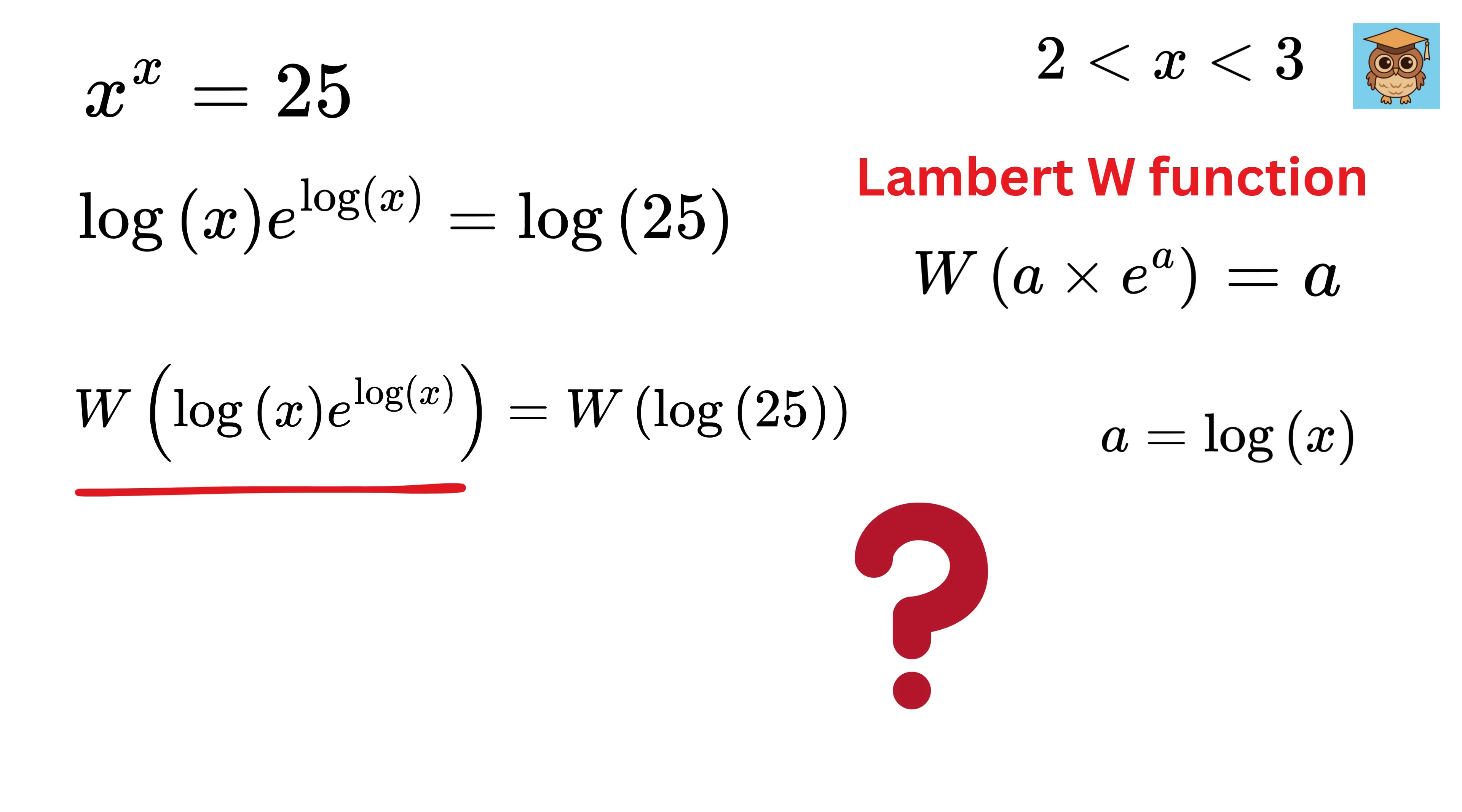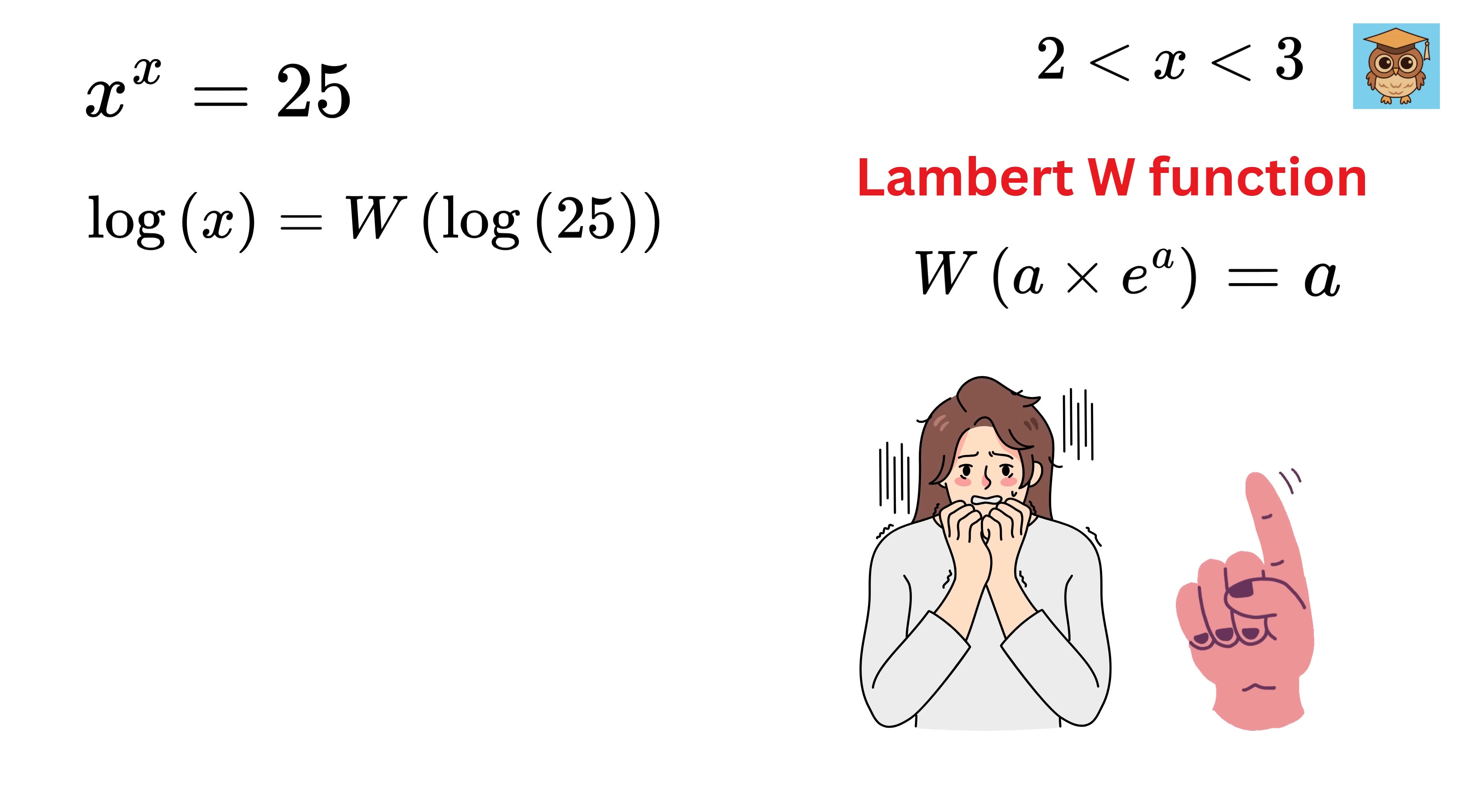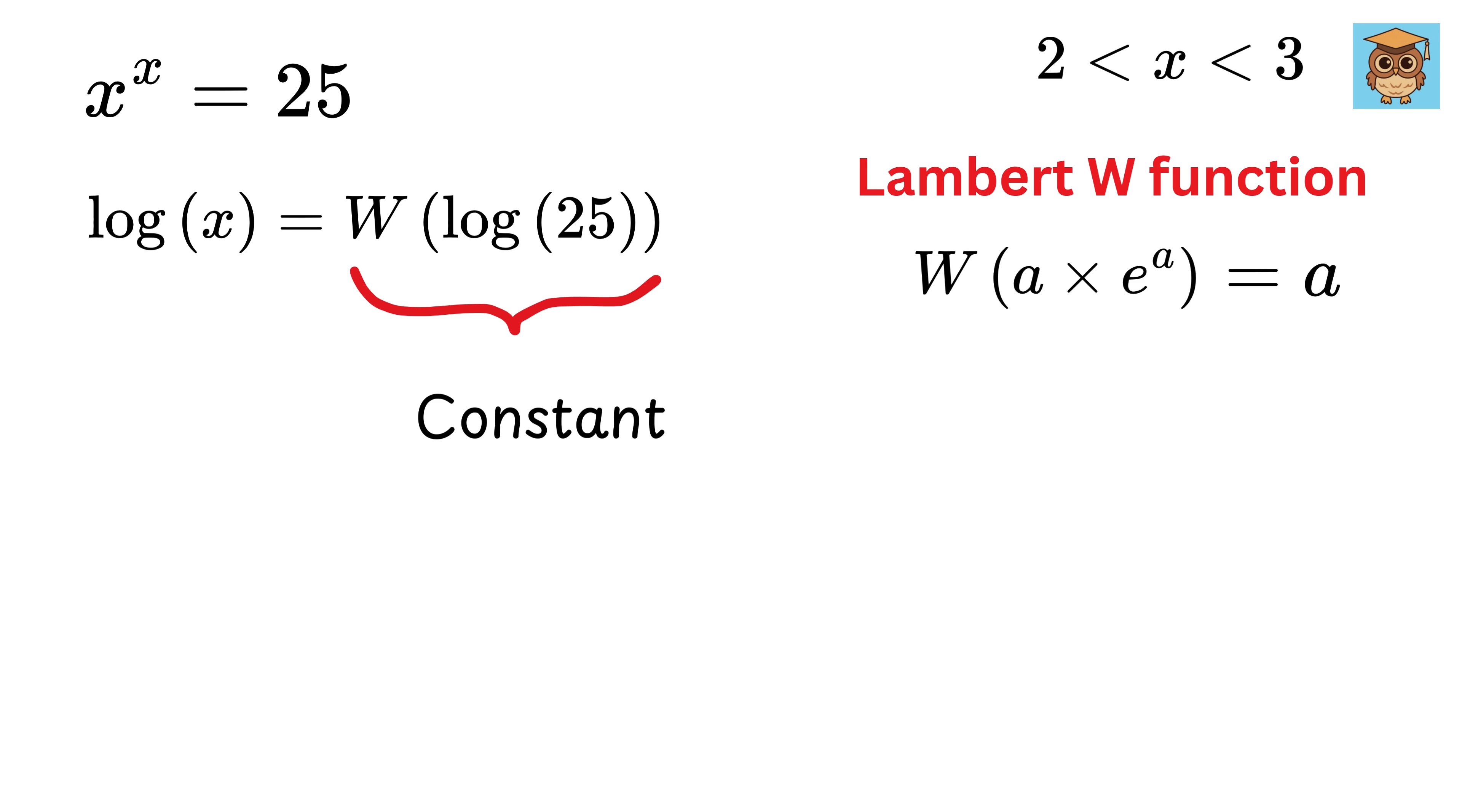What will be the value of this function? This value will be same as a, which will be natural log of x itself, and this will be equal to W of natural log of 25. Now don't be scared about this right-hand side. This natural log of 25 is a constant, and this is also a constant.